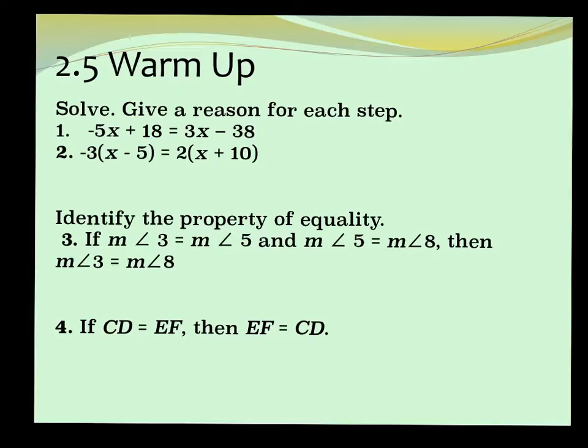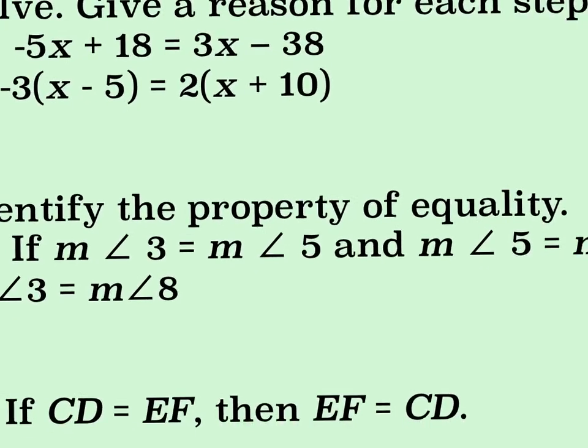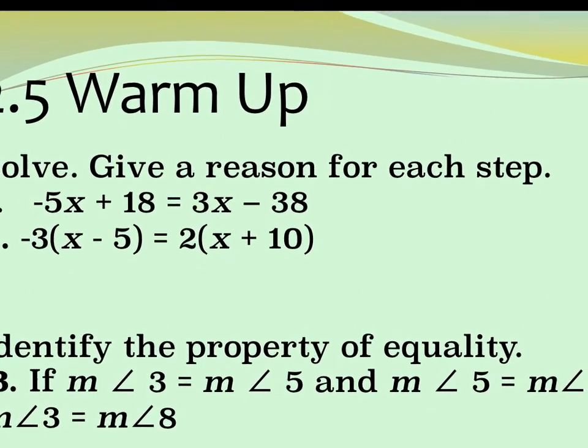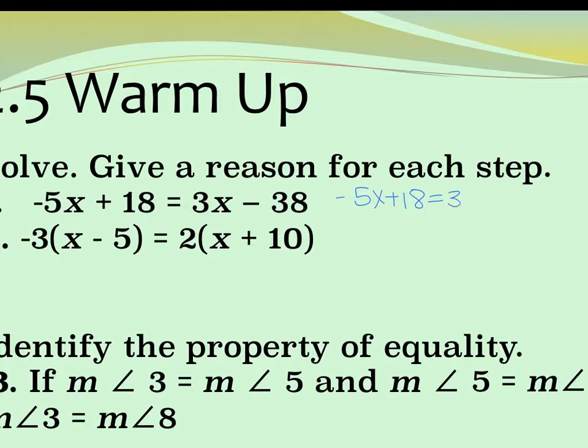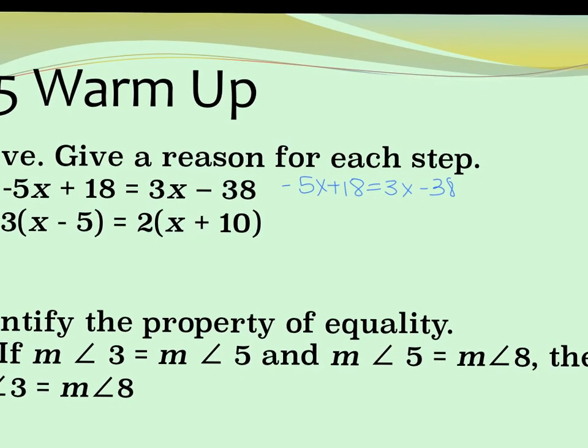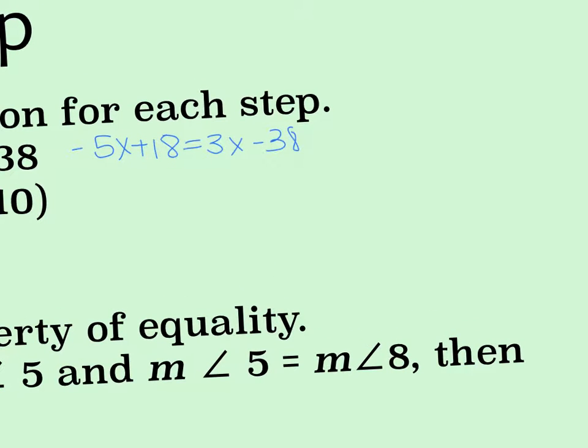If I were to start with number 1, when I rewrite that first step, what do I say is my reason? Good. So -5x + 18 = 3x - 38 and my reason would be given. What could have been your next step? You could add the 5x or add the 38. So you'd get 18 = 8x - 38, which was the addition property of equality.